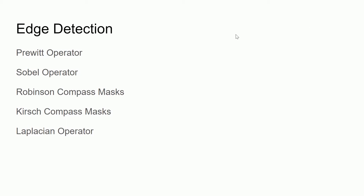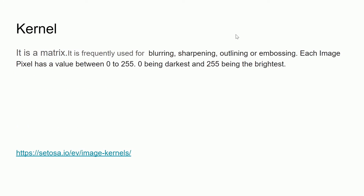Before explaining each operator and mask, I'd like to talk about the kernel. A kernel is a matrix used frequently for blurring, sharpening, outlining, or embossing. When we convert our image to grayscale, each grayscale pixel will have a value between 0 and 255 — zero being the darkest and 255 being the brightest.